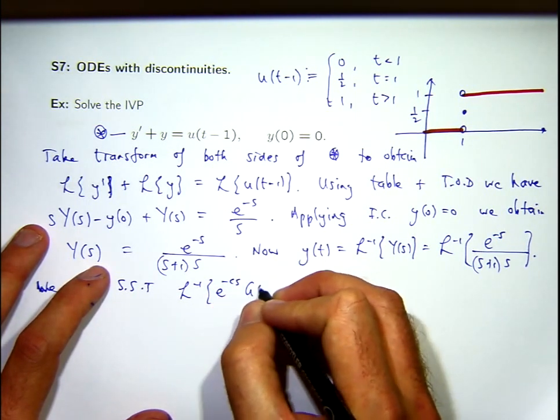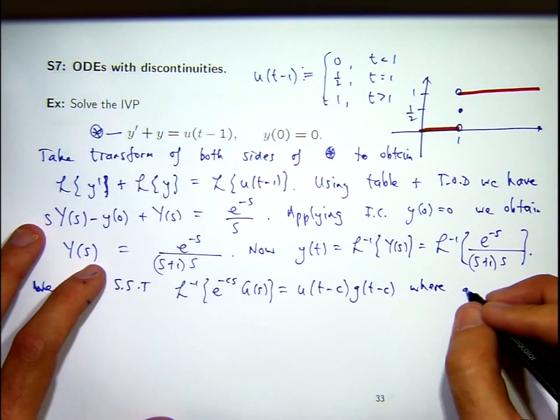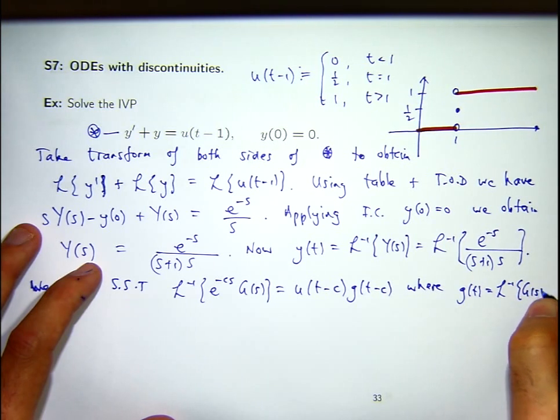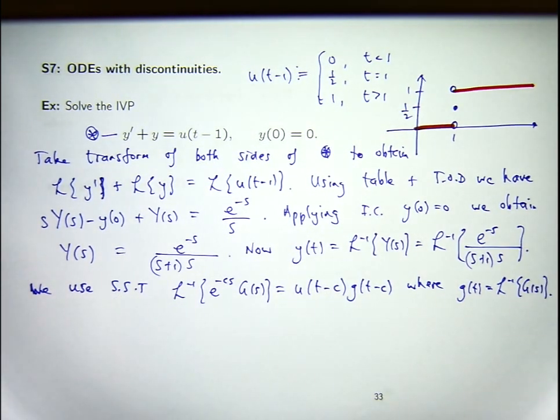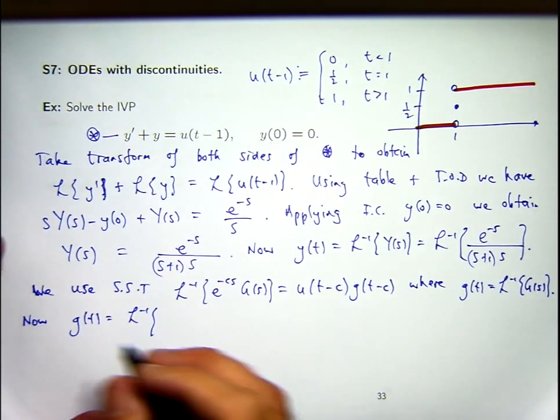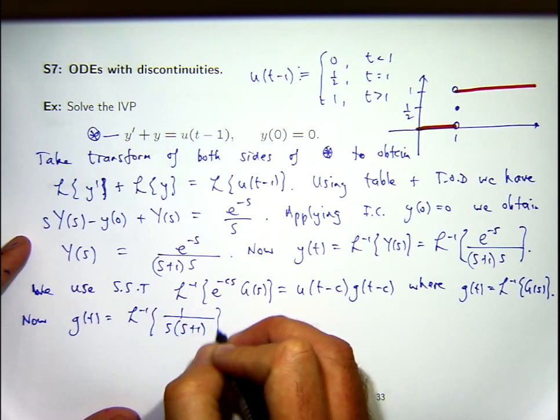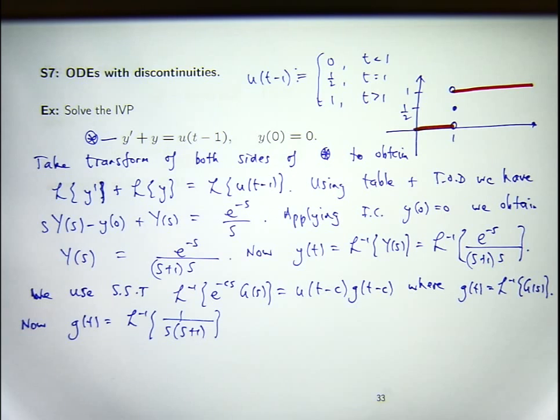The SST stands for the second-shifting theorem. So I'm just going to use our C as the constant here. So in this context, big G of S is 1 on s plus 1 times s. So if we apply the second-shifting theorem, we actually want to calculate this first. So let me just write it like this. So to calculate this, I need to actually calculate this, right?